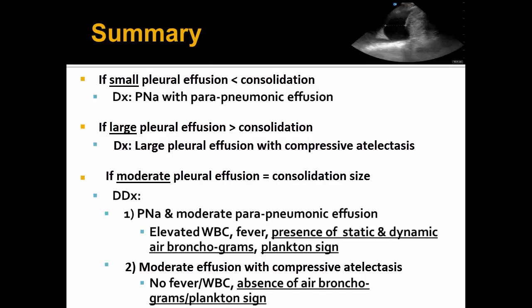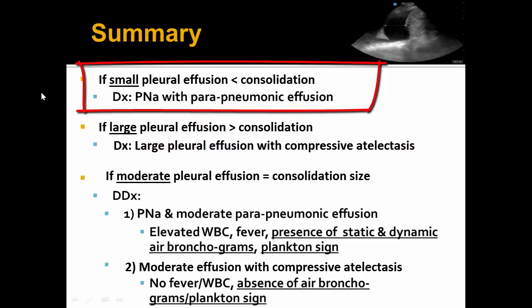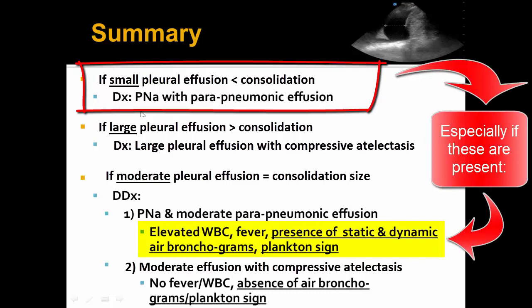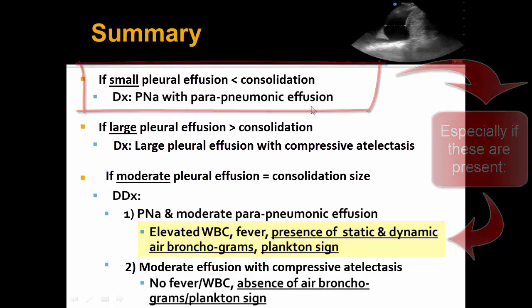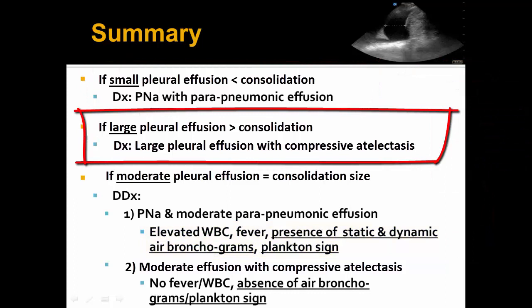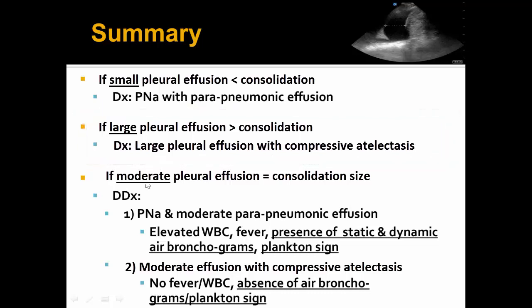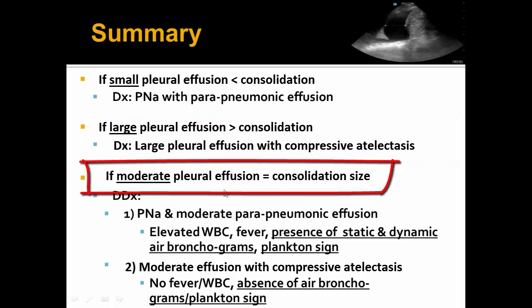In summary, I hope you can better appreciate that ultrasound lung consolidation patterns and pleural effusions coexist and pose a very common clinical question as to what the true diagnosis may be. If you are presented with a small pleural effusion which is much smaller than the lung consolidation size, we can make a diagnosis of pneumonia with peri-pneumonic effusion. On the other hand, if you do see a large pleural effusion which is greater in size compared to the consolidation, then you can diagnose a large pleural effusion with compressive atelectasis. If on ultrasound you see a moderate pleural effusion approximately equal in size to the volume of the consolidation, there are a couple of possible diagnoses, and it really does depend on the patient's clinical presentation.